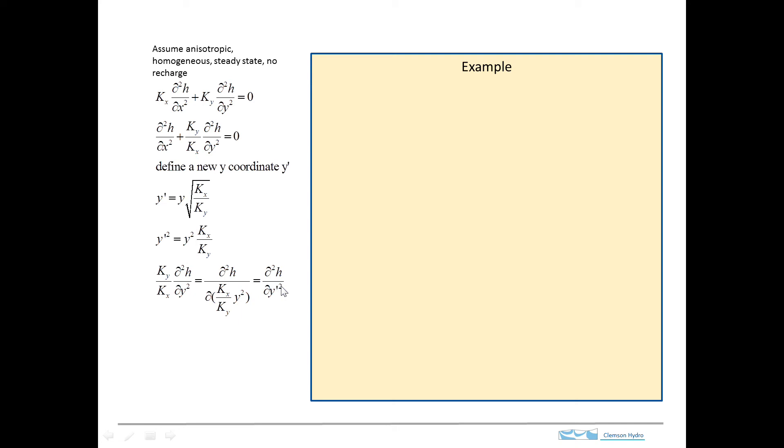So what we get out of this definition of this new coordinate system is that this term here is equivalent to the second derivative in this y prime coordinate system. So the end result of all that is that this equation for anisotropic conditions ends up looking like an equation for isotropic conditions if we change the y coordinate to y prime.